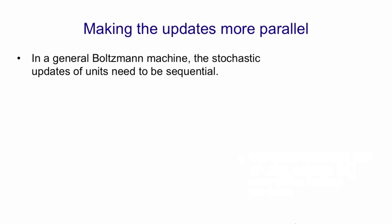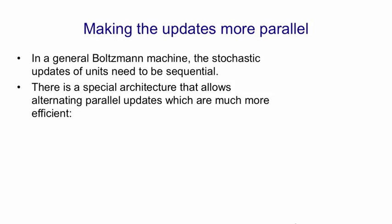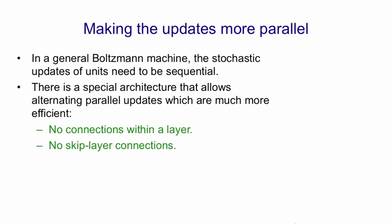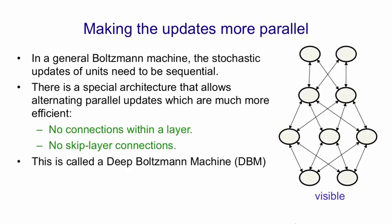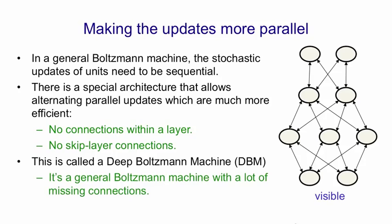If we want to make the updates for the fantasy particles more parallel, we can change the architecture of the Boltzmann machine to one that allows alternating parallel updates for the fantasy particles. We have no connections within a layer and no skip-layer connections, but we allow ourselves lots of hidden layers. We call it a deep Boltzmann machine. It's really a general Boltzmann machine with lots of missing connections — all those skip-layer connections, if they were present, we wouldn't really have layers at all; it would just be a general Boltzmann machine.